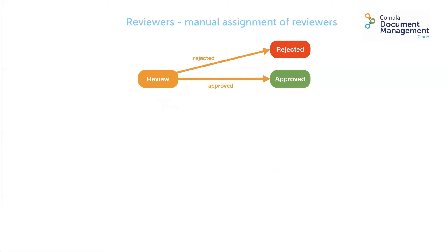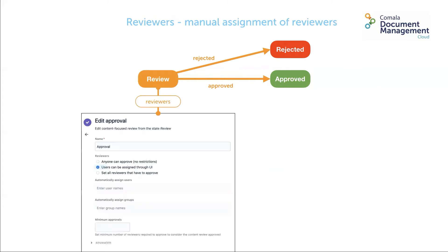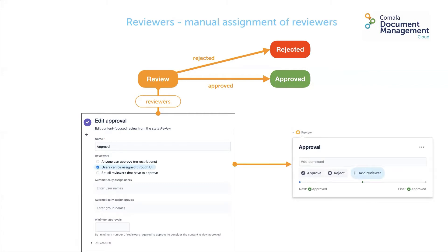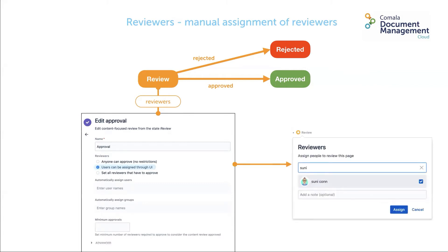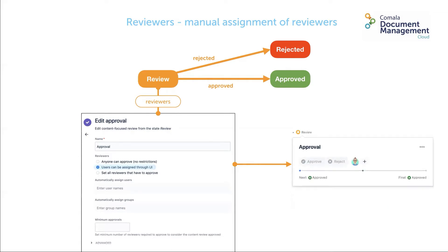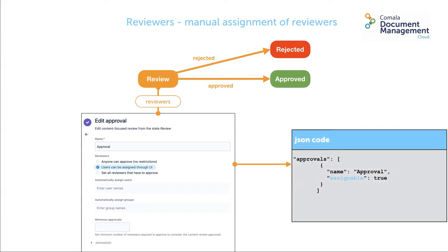If you allow manual assignment of reviewers — the second option — the workflow pop-up simply has a plus and the add reviewer option. You can assign one or more reviewers, but they all must agree for the transition to occur. Once you've assigned one reviewer, the Approve and Reject buttons are disabled for anyone else. A reviewer must then be assigned before they can undertake an approval decision. In the JSON code, the approval becomes assignable set as true.